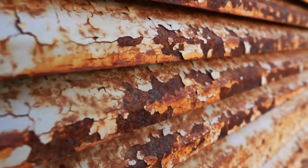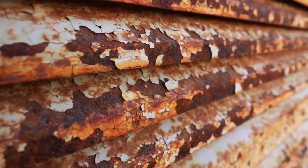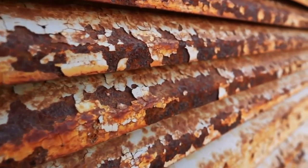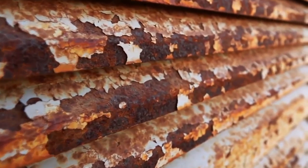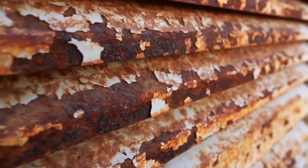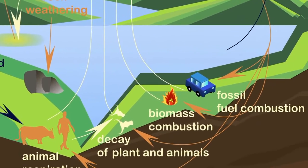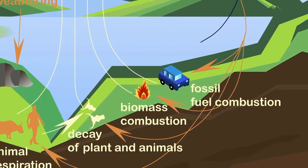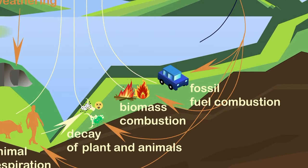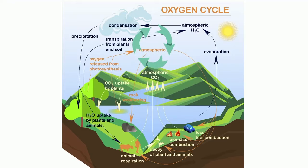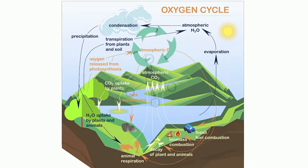Rusting or oxidation involves oxygen to create rust on many metals. Combustion or burning of objects like coal, wood, or fossil fuels also requires oxygen and uses some of it up. The oxygen continues to move around the Earth from producers to consumers to keep the level in balance.